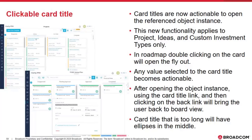Roadmaps are not clickable to access the object data, but by double-clicking on the roadmap item, you will see the details for that specific roadmap item. Any value that you set as the card title will automatically become clickable — it does not have to be the name of that object instance, but any value you pick as the card title will become actionable.